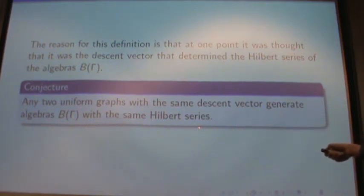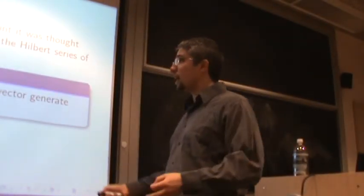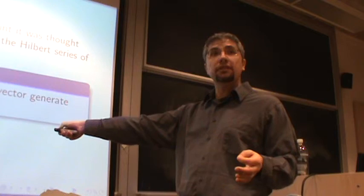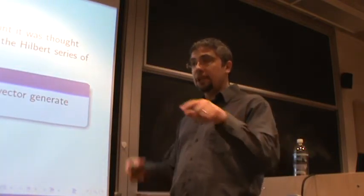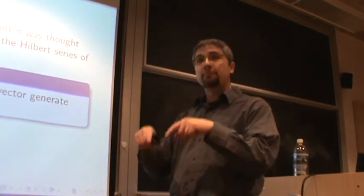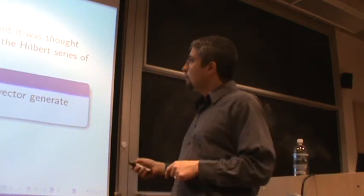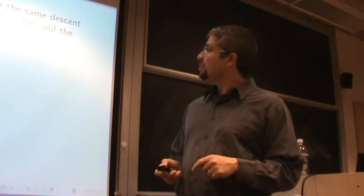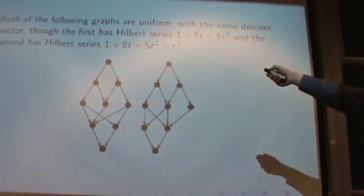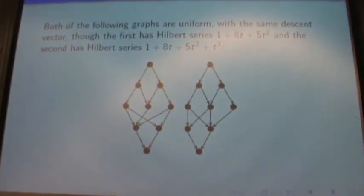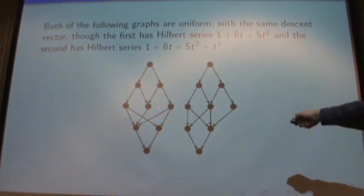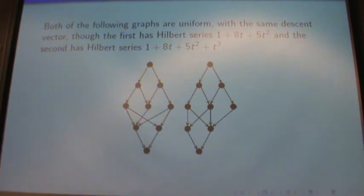And there was a conjecture that any two uniform graphs with the same descent vector generate algebras B-gamma with the same Hilbert series. So this is not too strong. It's not saying it generates the same algebra B-gamma, just algebras B-gamma with the same Hilbert series. And if you think about the relations from B-gamma, it kind of makes sense because they're all determined by the descent. But no. And Hilga was the one to disprove it. And not only did Hilga disprove it, Hilga put her poset in the minimal counterexample again.